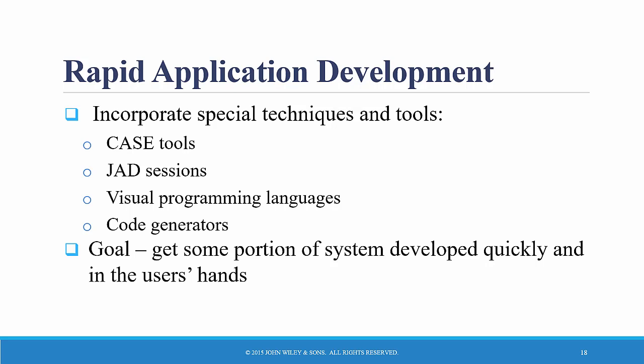There are at least three different flavors or versions of Rapid Application Development. One way that RAD speeds things up is it uses special tools — so-called Computer-Aided Software Engineering or CASE tools — as well as JAD sessions, Joint Application Development sessions, where people get together in groups, brainstorm, and try to get features working very quickly. It also uses so-called productivity-enhancing fourth-generation visual programming languages, such as Visual Basic .NET and code generators.